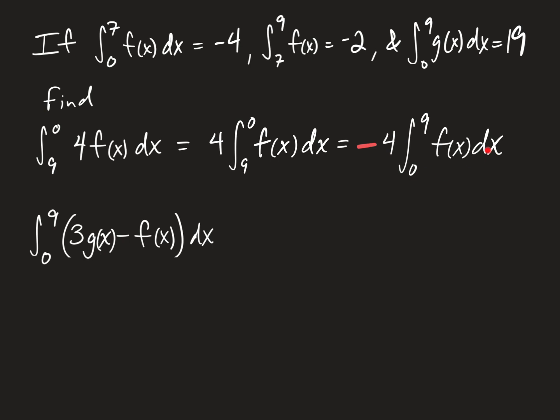So this big integral is the sum of these two smaller integrals from zero to seven and seven to nine. So if it's the sum of these two smaller integrals, we can just add these values together and get negative six. So this entire integral here equals negative six. So we're left with negative four times negative six, which is 24.